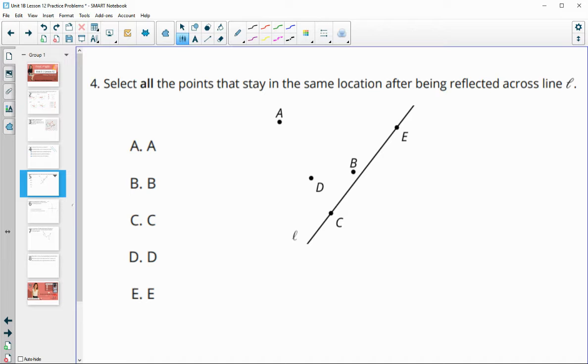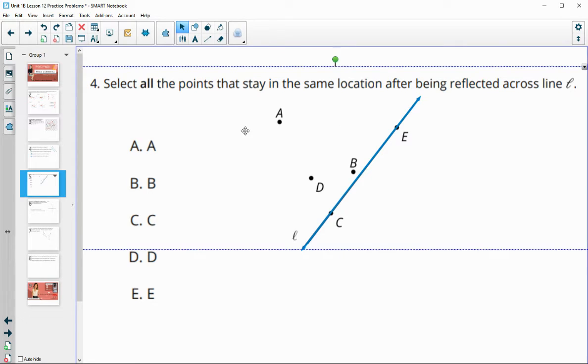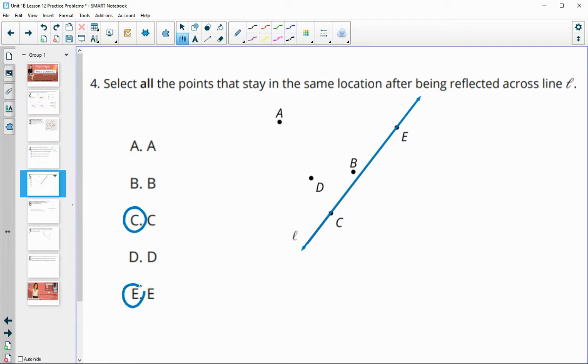Number four, select all the points that stay in the same location after being reflected across line L. So remember, if we're reflecting across a line, the points are going to be reflected to the other side of the line, the same distance. So we're going to want something that's a distance of zero so that it stays. Because A will map over to here, B will map over to here, D will map over, C and E will stay in the exact same spot since they are on the line of reflection.